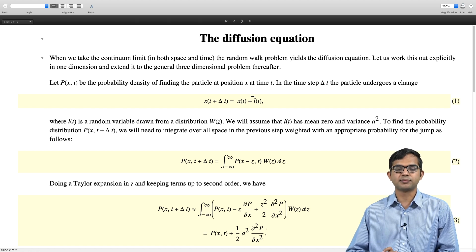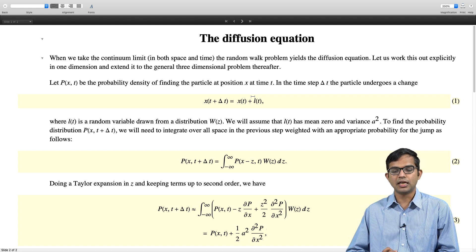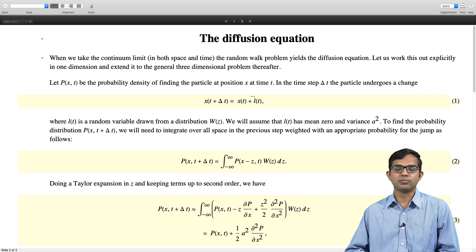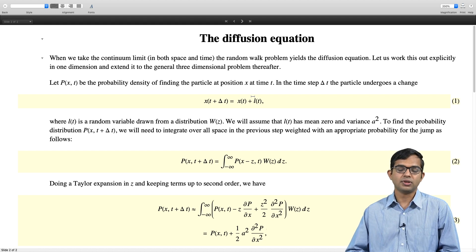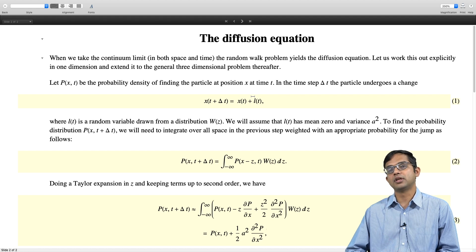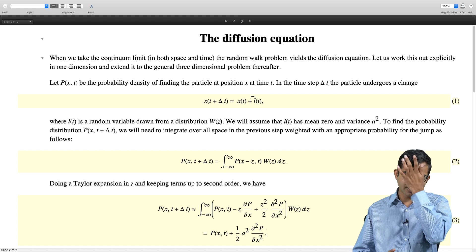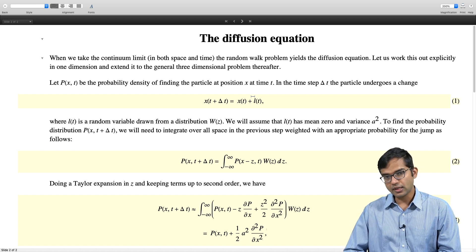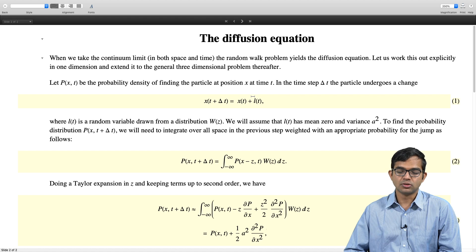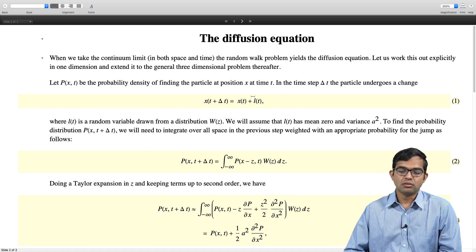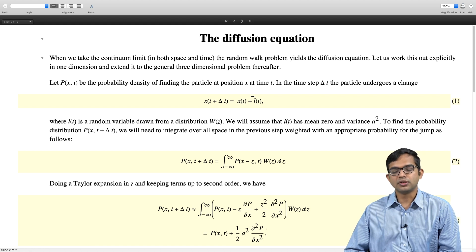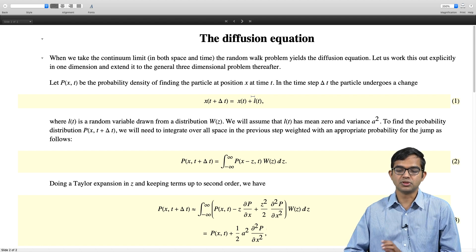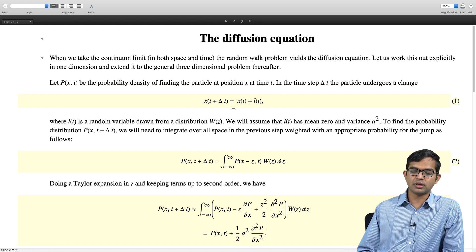Then we were able to do a Taylor expansion of this probability P(x,t+delta t) in terms of x minus z. We assumed the last jump from x minus z to x could happen for all values of z from minus infinity to plus infinity, and there is a weight associated with all these jumps. Typically you think of W(z) to be a sharply peaked function, so the possibility of very large positive or negative jumps are usually very minimal. The key point is that you do not give any special forms for W(z). It is a very generic distribution function.